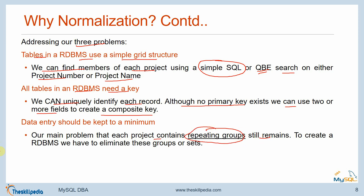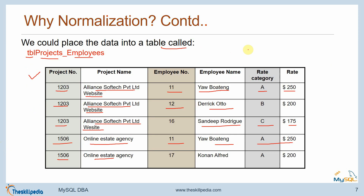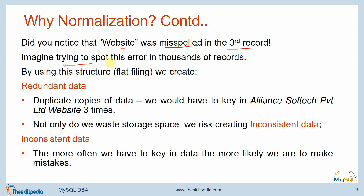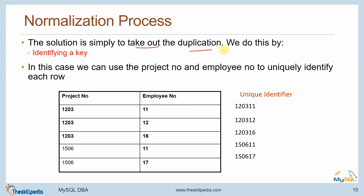Did you notice that 'website' was misspelled in the third record? Imagine trying to spot this kind of error in thousands of records. By using this structure we create redundant, duplicate data — we would have to key in 'Alliance of Tech Private Limited Website' three times. Not only do we waste storage space, we risk creating inconsistent data. The more often we have to key in data, the more likely we are to make mistakes. The solution is to take out the duplication by identifying a key.